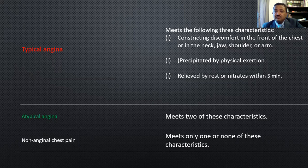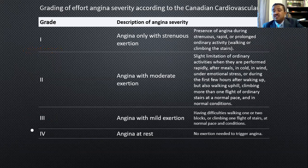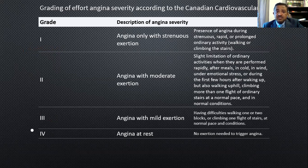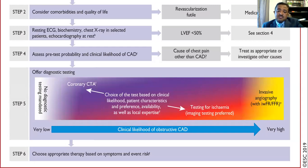Our patient clearly had two out of three features — chest pain with typical cardiac sound, and it was precipitated by physical exertion. It is really important to classify him as atypical anginal, because when we come to pre-test probability, that will help us select the appropriate investigation. This is the Canadian Cardiovascular Society grading of angina: grade one with heavy exertion, grade two with moderate exertion, grade three with mild exertion, and grade four at rest. This is helpful to differentiate stable versus unstable angina, as management pathways differ.